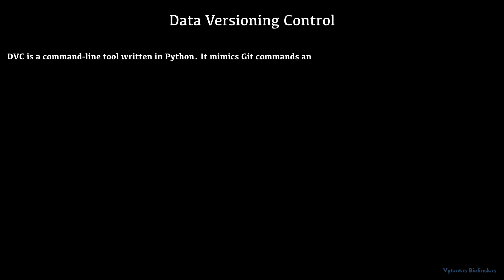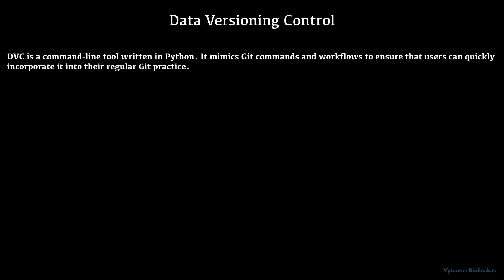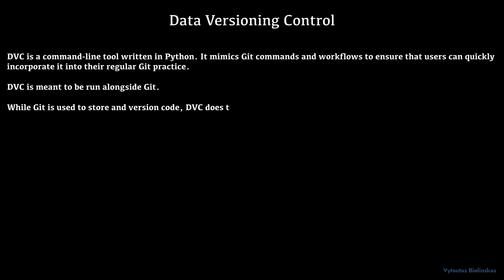Data Version Control is a command line tool written in Python. It mimics git commands and workflows to ensure that users can quickly incorporate it into their regular git practice. Data Version Control is meant to be run alongside git — while git is used to store and version code, DVC does the same for data and model files.